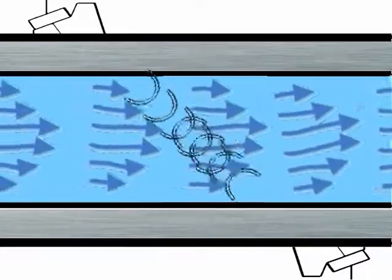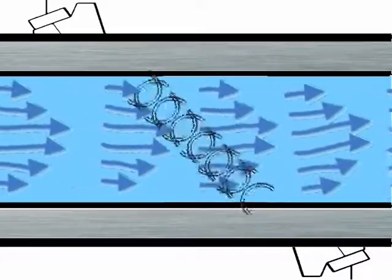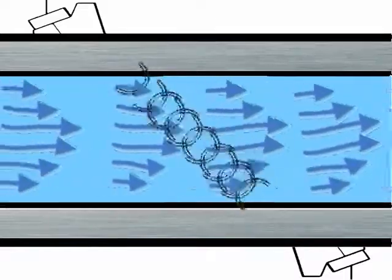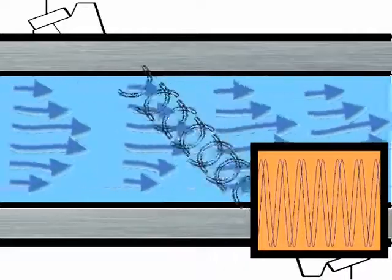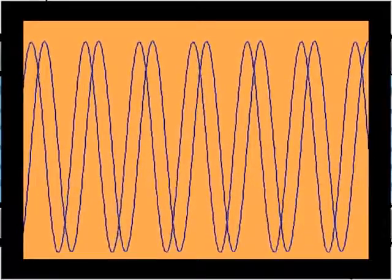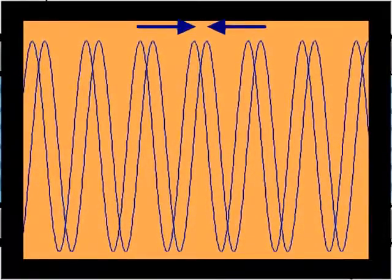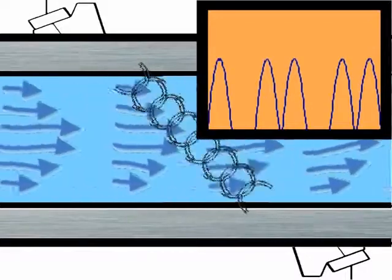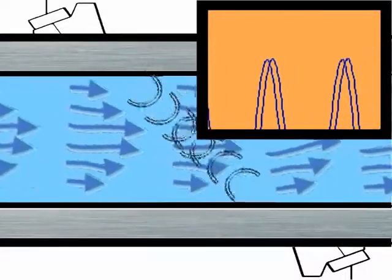When we have a signal sent simultaneously from both sides of the pipe, the signal traveling with the flow will arrive faster than the signal traveling against the flow. To measure the difference in arrival time we will simply look at the phase shift between the two signals. This phase shift difference is directly proportional to the speed of the liquid in the pipe.